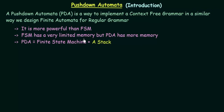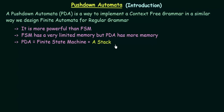FSM has very limited memory, but Pushdown Automata has more memory. Pushdown Automata is equal to a Finite State Machine plus a stack. The difference between a Finite State Machine and Pushdown Automata is that Pushdown Automata consists of something like a Finite State Machine, plus the extra component of a stack. This stack has infinite memory, and this is what gives Pushdown Automata its higher power over the Finite State Machine.